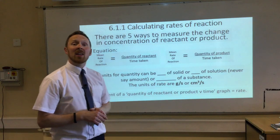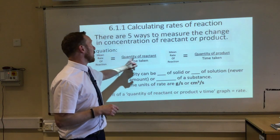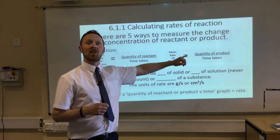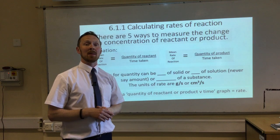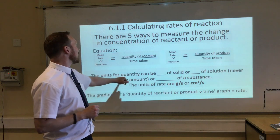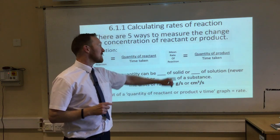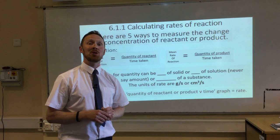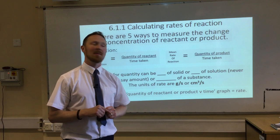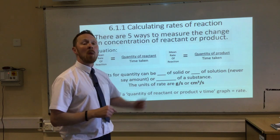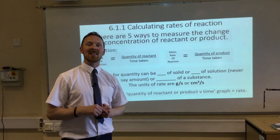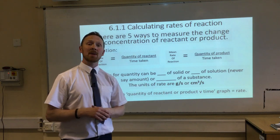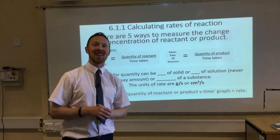To calculate the rate of reaction, you either take the quantity of the reactant divided by the time taken, or the quantity of the product formed divided by the time taken. The units for quantity can be grams if it's a solid, or centimetres cubed if it's a solution — never say amount — or moles of a substance, especially for higher tier where we can do calculations with moles. The unit of rate is grams per second, or centimetres cubed per second.